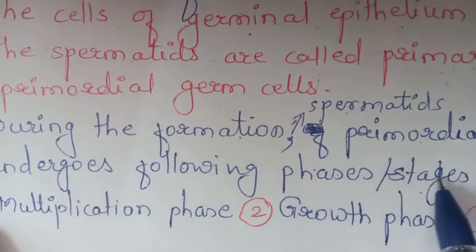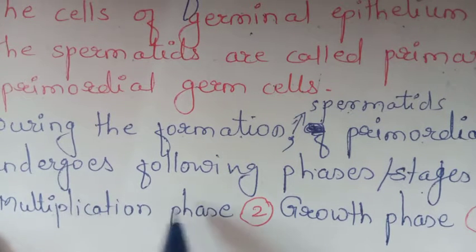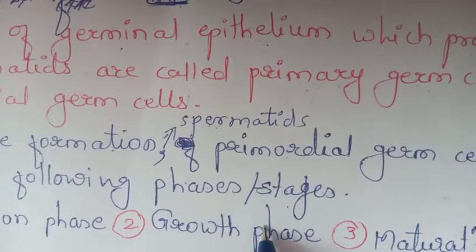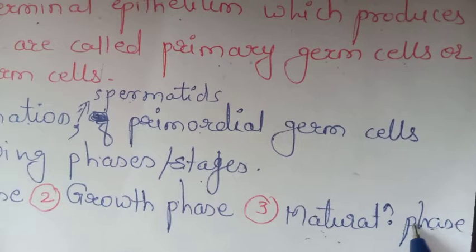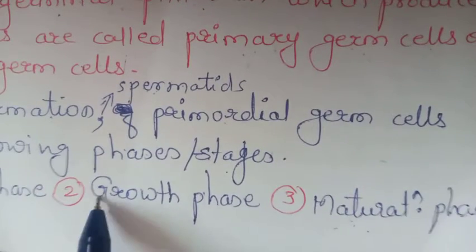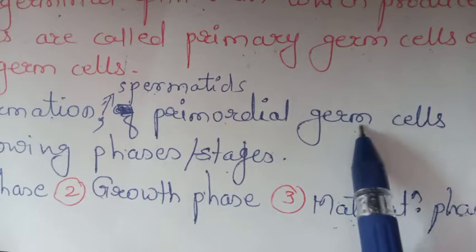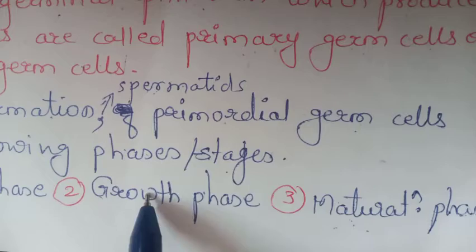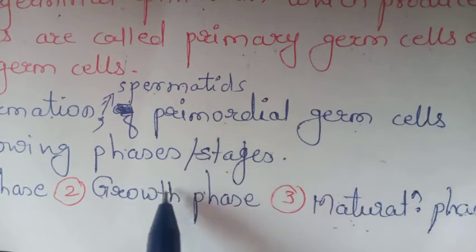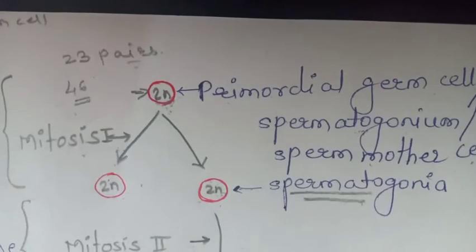There are three stages. The first stage is the multiplication phase. The next phase is the growth phase. The third phase is the maturation phase. These three phases are undergone by the primordial germ cells and together constitute the whole process of spermatogenesis.